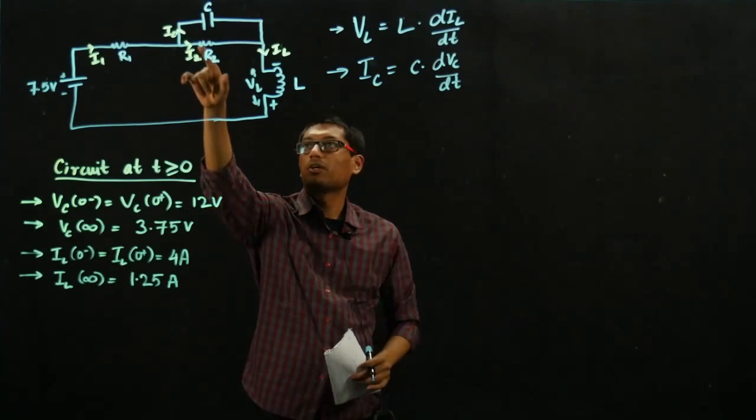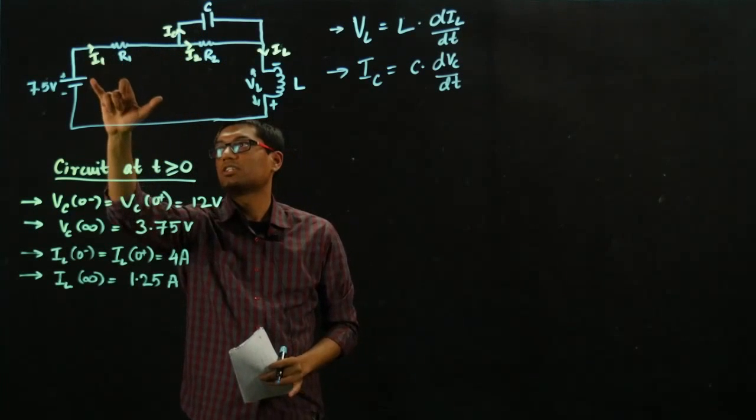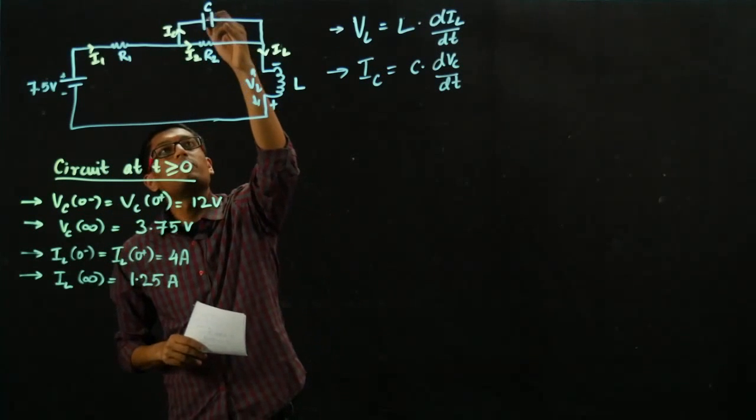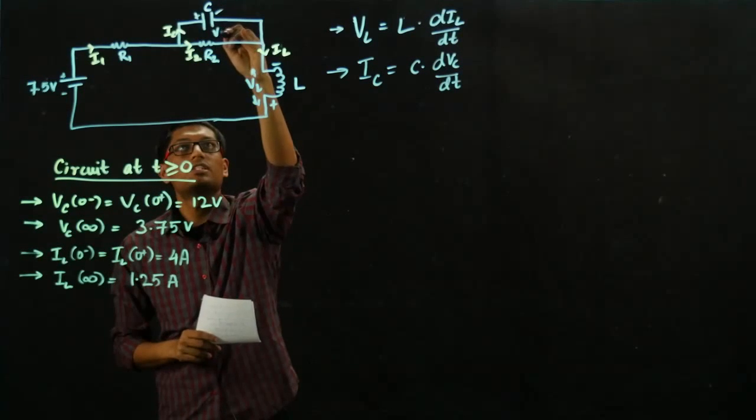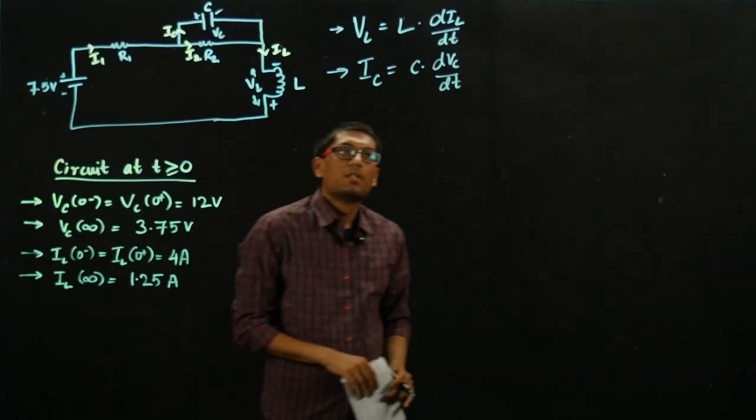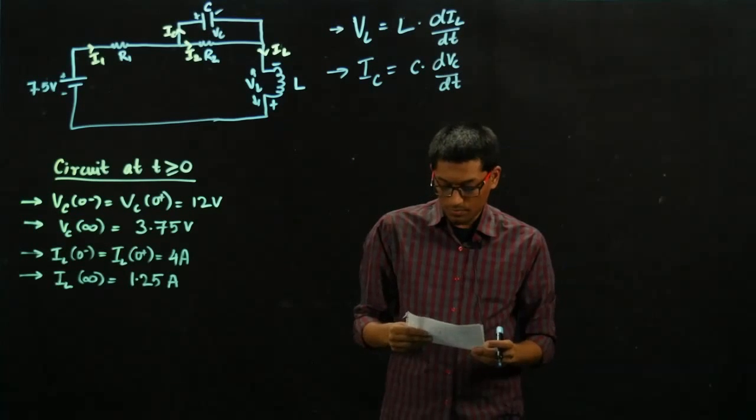And similarly on the capacitor, because this terminal is connected to the positive end of the battery, this would be positive and this would be negative. Let's call the voltage difference across the capacitor as VC.